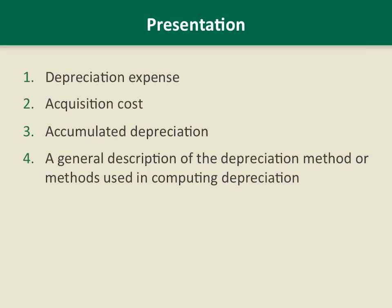In terms of presentation of information related with property, plant, and equipment and natural resources, the following four pieces of information are required by the SEC. Number one: depreciation expenses. Of course, if we're talking about natural resources, it is called depletion.